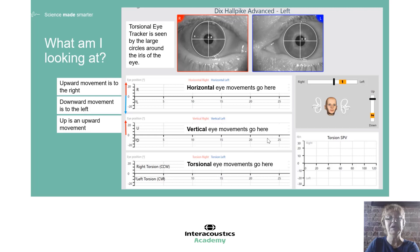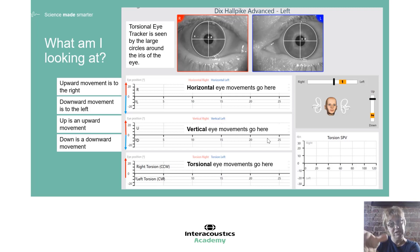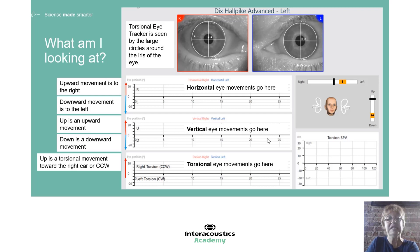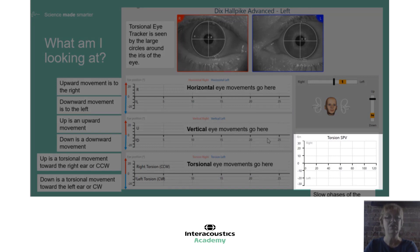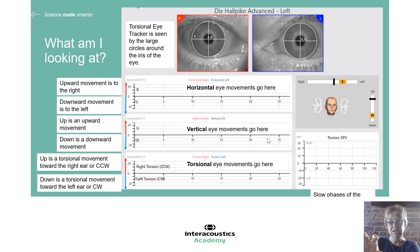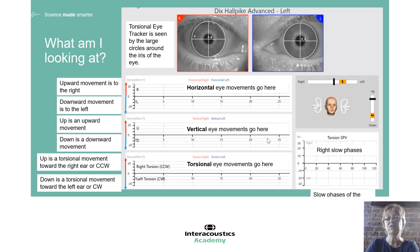The vertical box is straightforward — things going up are upward movement, things going down are downward movement. For torsion, things going up are also to the right, but in the clockwise/counterclockwise sense: things going up (to the right) would look counterclockwise to the examiner, and things going down (to the left) would look clockwise. On the side, we see the slow phase velocity — torsion SPV — because we only care about the slow phase driven by the vestibular system. Right slow phases go up and left slow phases go down. Below that we see head position from the sensor attached to the goggles.